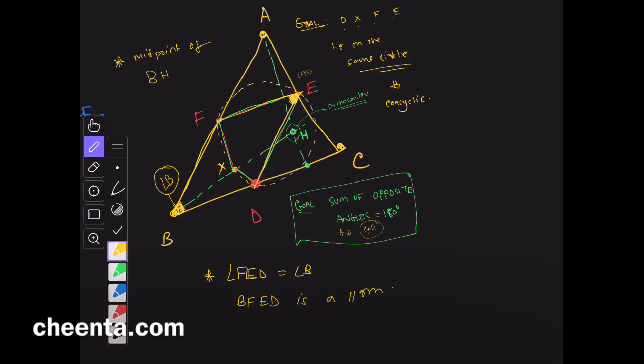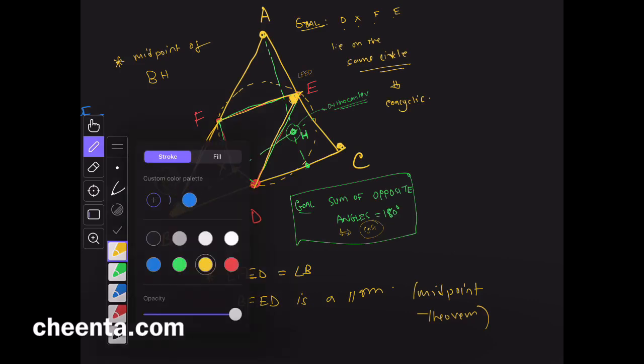Why is it a parallelogram? Well, I am using the midpoint theorem here. Midpoint theorem. So, what do I get by that? Well, I know that F is the midpoint of AB, E is the midpoint of AC. So, if you join the two midpoints of the two sides of the triangle, it will be equal to half of the third side and parallel to it.